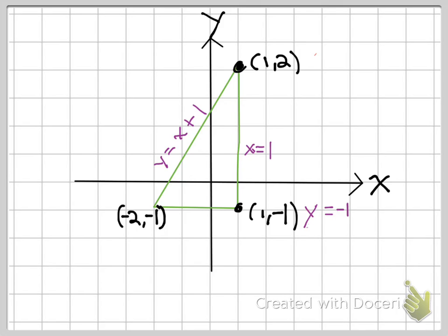You could find the slope and then the intercept, and then calculate the equations of the lines here. So this would be x equals 1, and this would be y equals negative 1.